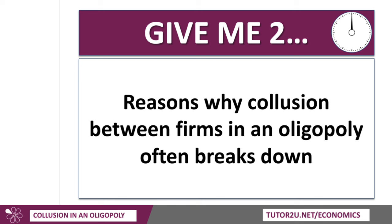Collusion often breaks down, and cartels are rarely permanent. The maple syrup cartel has been around for many years, and OPEC has been around for many years, but just recently Angola left the OPEC oil cartel because they wanted to raise their own output. Can you give two reasons why collusion between firms within a cartel often breaks down?